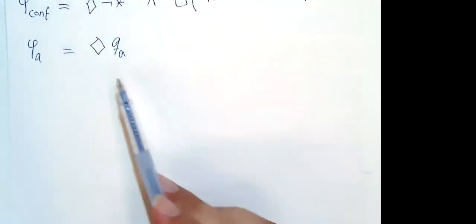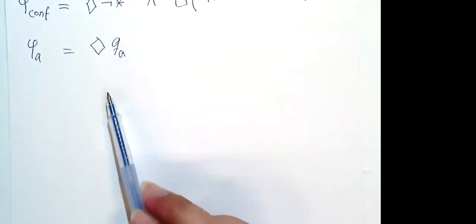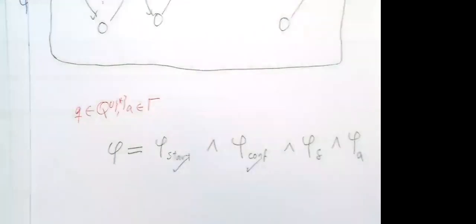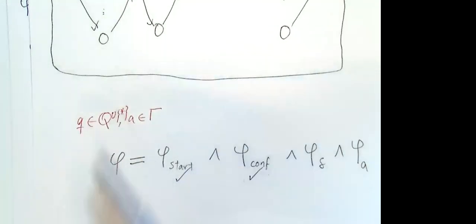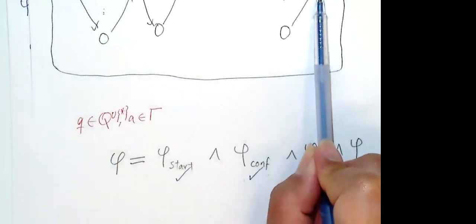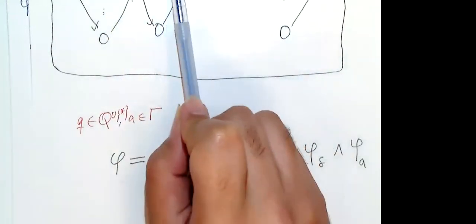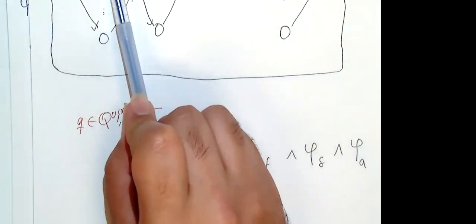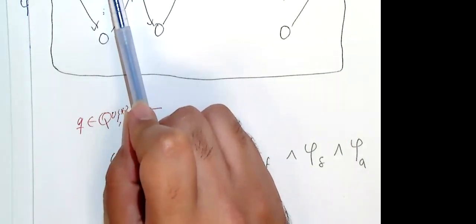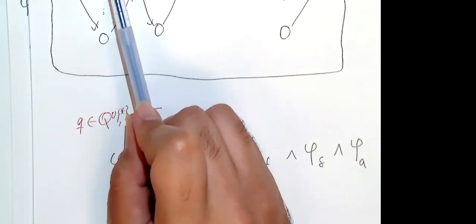For phi_A: we simply require that we eventually see state QA. Since the configurations correctly track the Turing machine state, seeing QA in an intermediary vertex genuinely means the machine has reached the accepting state.